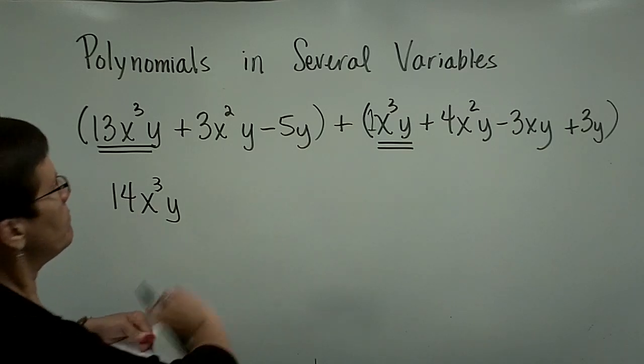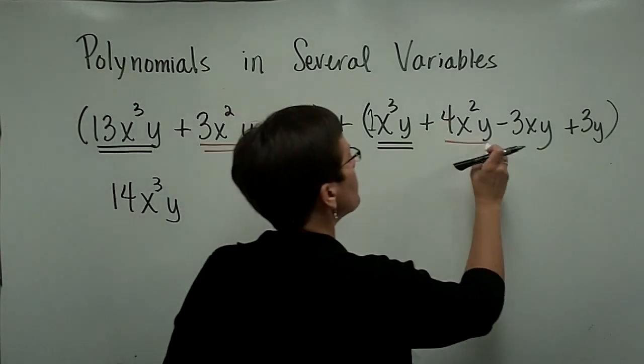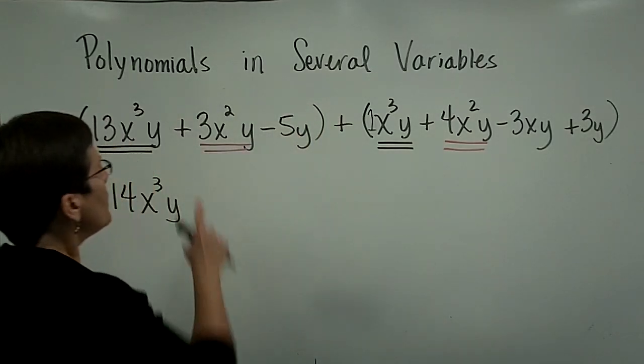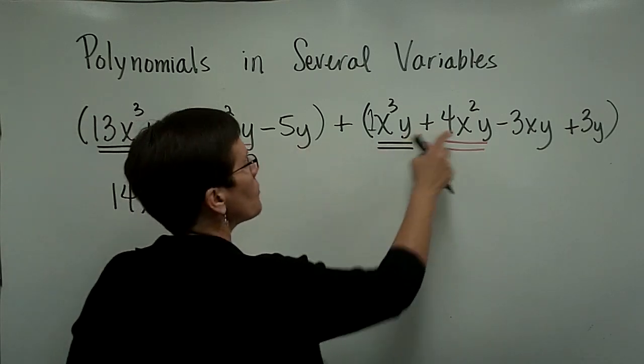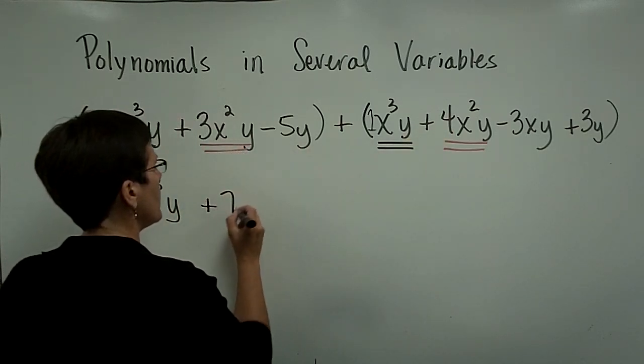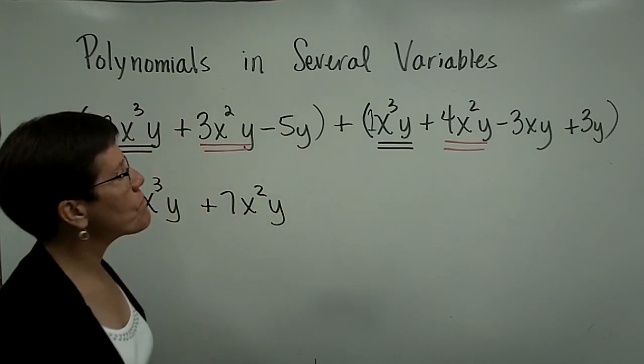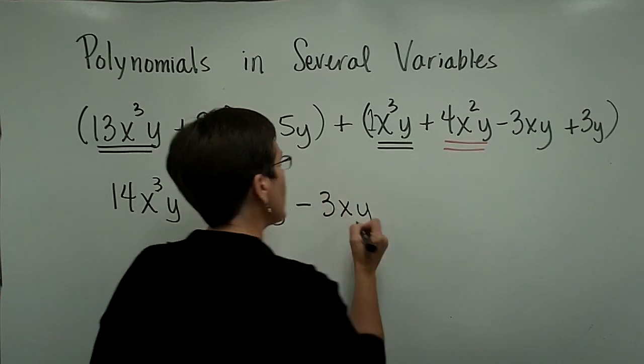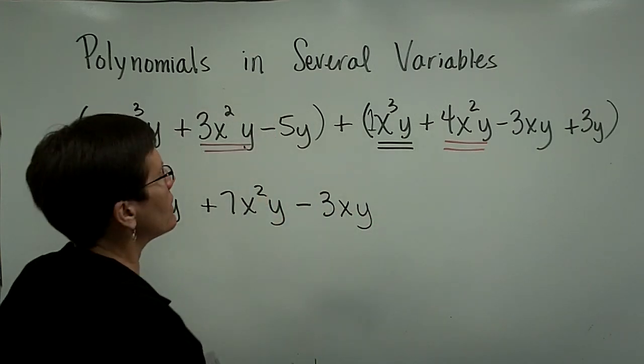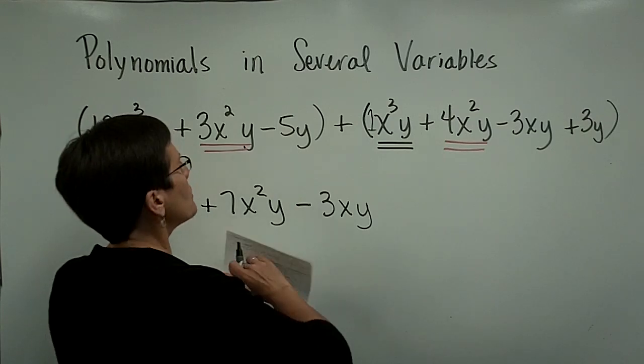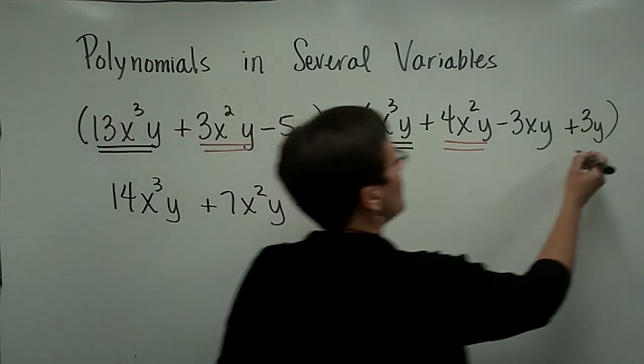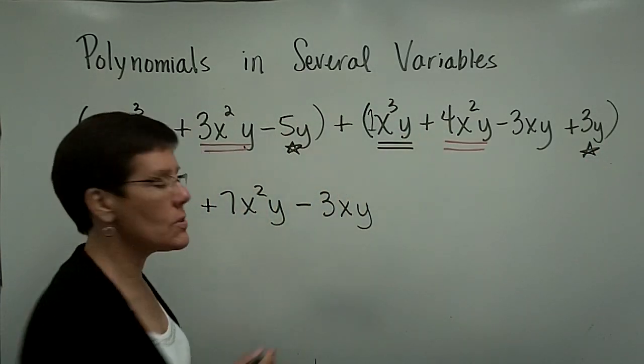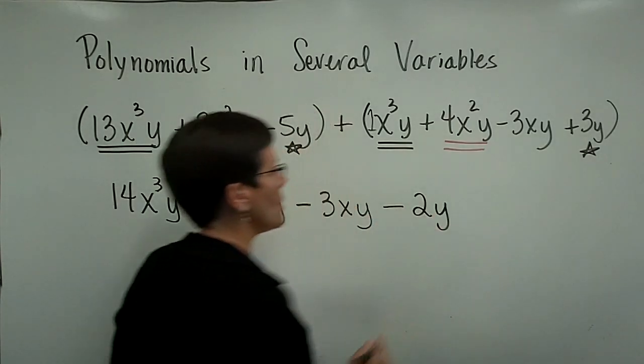The next term, there is an x²y and there's x²y also. Those are like terms as well. This has a coefficient of 3, a coefficient of 4, for a total of 7x²y's. I'm going to bring this minus 3xy down next, because the degree of that term is 2. We tend to put that next before we would put this minus 5y and plus 3y, which are like terms. Negative 5 plus 3 is minus 2 and I'm done.